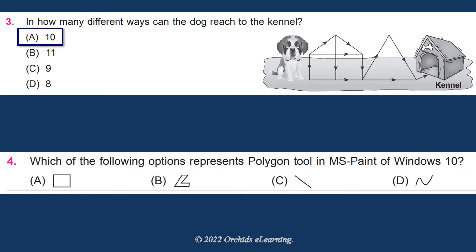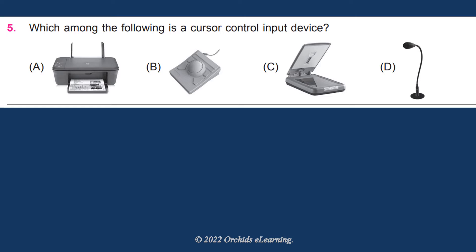Which of the following options represents the polygon tool in MS Paint of Windows 10? The answer is B, the polygon tool. Which among the following is a cursor control input device? The answer is B.